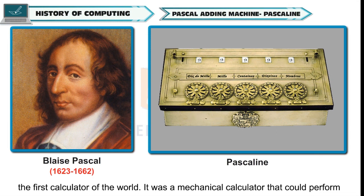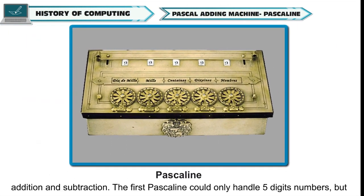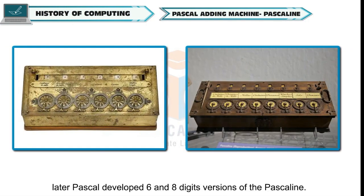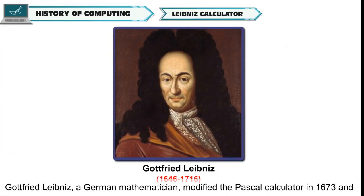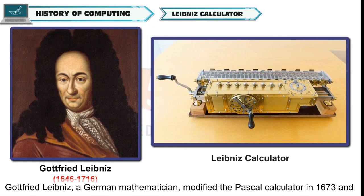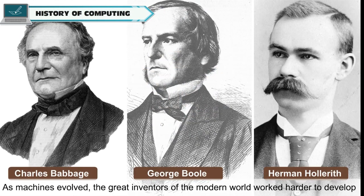In the year 1642, French mathematician Blaise Pascal invented the Pascaline, regarded as the first calculator of the world. It was a mechanical calculator that could perform addition and subtraction. The first Pascaline could only handle five-digit numbers, but later Pascal developed six and eight-digit versions. Gottfried Leibniz, a German mathematician, modified the Pascal calculator in 1673 and developed a machine called the Leibniz calculator.